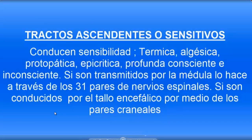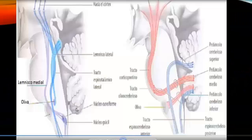Therefore, we deduce that there exist ascending or sensory tracts that conduct thermal, pain, protopathic, and epicritic sensibility. These are transmitted by the spinal cord through the 31 pairs, or if by the brain stem, through the 12 cranial nerve pairs.